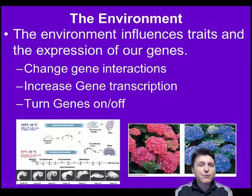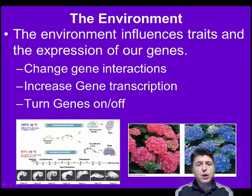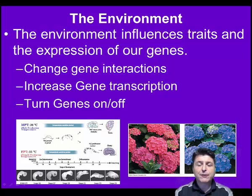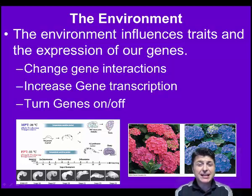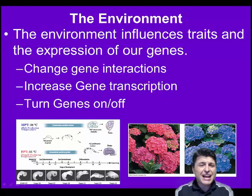Another way the environment might influence our traits is by increasing genetic transcription, where some environmental factor increases the production of a particular protein. For example, stress might change the amount of protein made by genes involved in our immune system, therefore making it easier to get sick if we happen to be stressed.